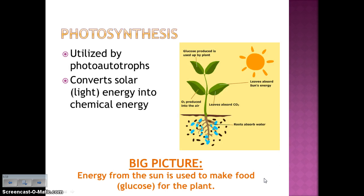We're going to talk about two major processes today: photosynthesis and cellular respiration. Let's start with photosynthesis, which is utilized by photoautotrophs. The big picture of photosynthesis is that energy from the sun is going to be used to make food, or glucose, for the plant. So we're converting solar or light energy into chemical energy.